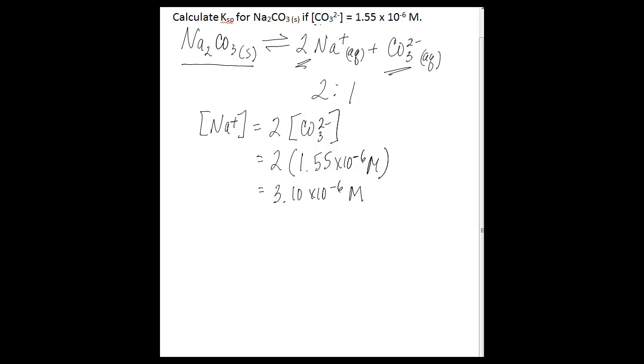So now you have both a carbonate ion concentration and a sodium ion concentration, and you can write your Ksp expression. So Ksp is going to be equal to products over reactants, so you have the concentration of the sodium cation raised to the second power because sodium has a stoichiometric coefficient of 2 in the balanced equation.